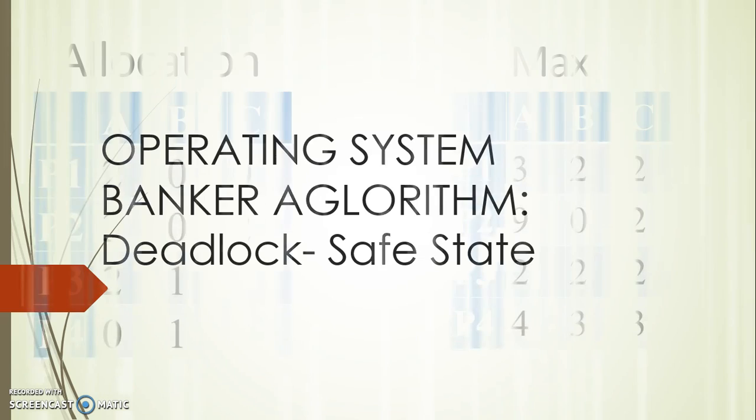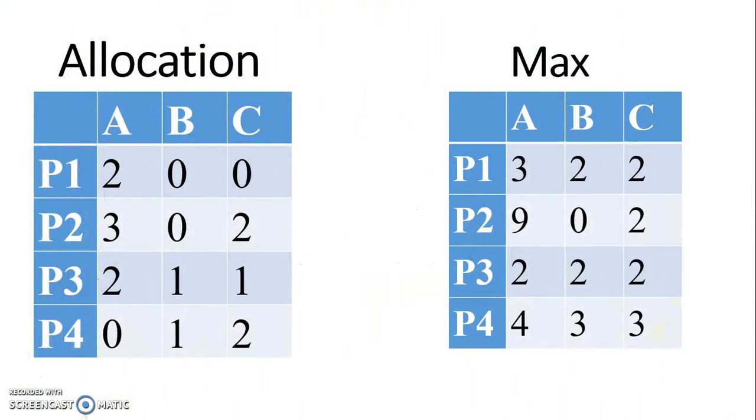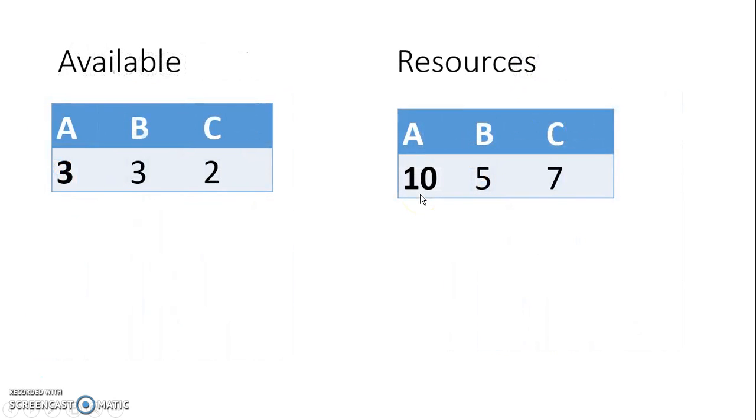Have a look at the timetable. The table is divided with resources A, B, and C, and there are four processes: P1, P2, P3, P4. Same goes to the max table. This is the available timetable which is A, B, C: 3, 2, 1, 3, 2, and resources which is A, B, C: 10, 5, and 7.